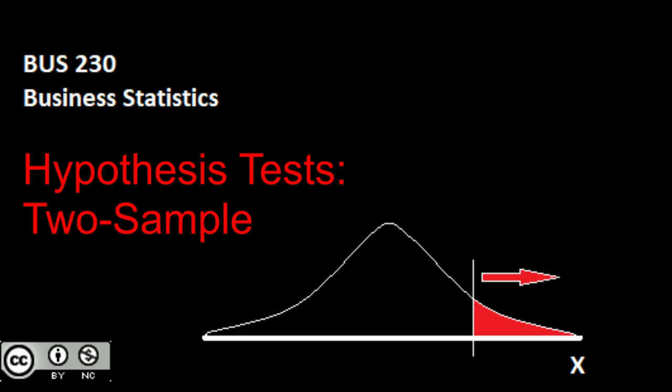That's what we're going to be taking a look at as we move through this video. Specifically, we want to be able to conduct our five-step hypothesis testing procedure for a few different cases. First, we're going to look at conducting those five steps to determine a difference in population means — is this population mean likely different than that population mean?